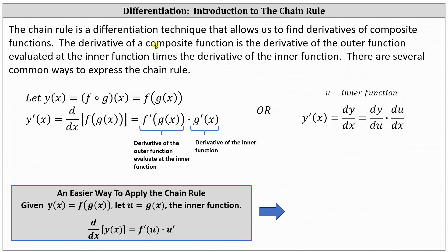For example, y of x is a composite function if it's in the form of f of g of x. The derivative of a composite function is the derivative of the outer function evaluated at the inner function, times the derivative of the inner function.